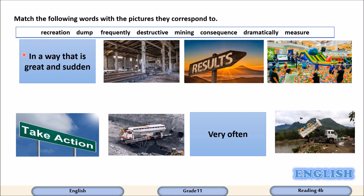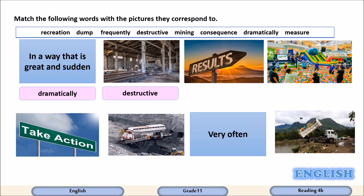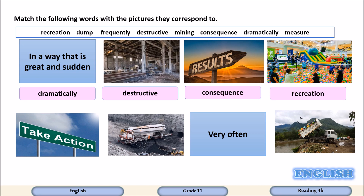Let's start with the first picture. When something happens in a way that is great or sudden, it happens dramatically. Look at the second picture — something destructive happens. The third one shows the results of something: consequence. Look at this picture — the people are having fun and playing, so this is called recreation, or recreational activities.